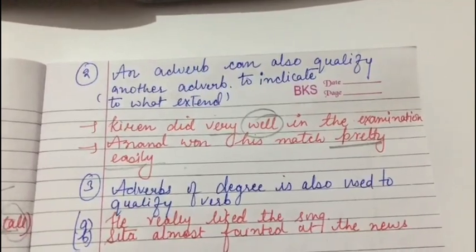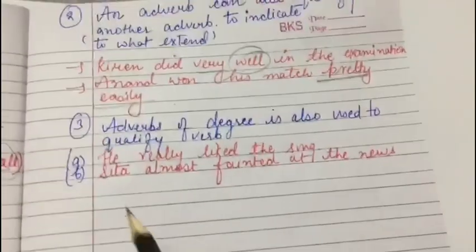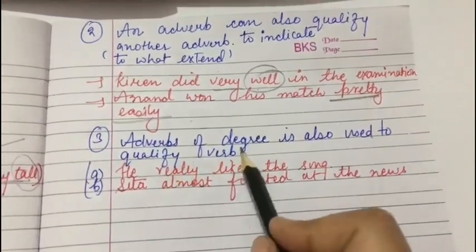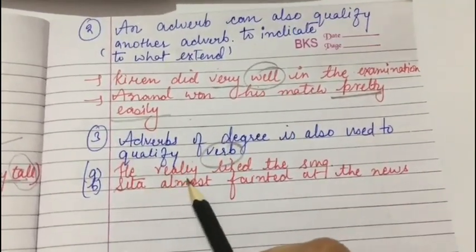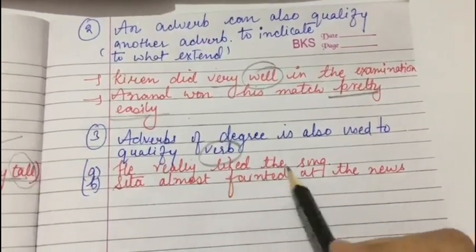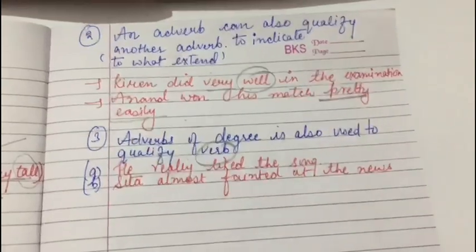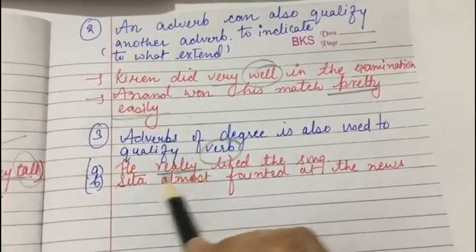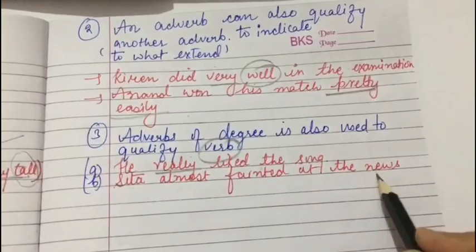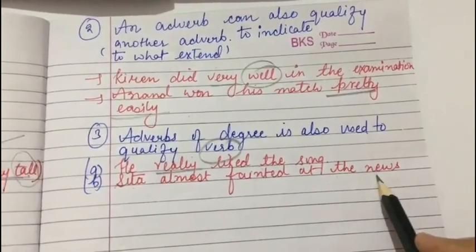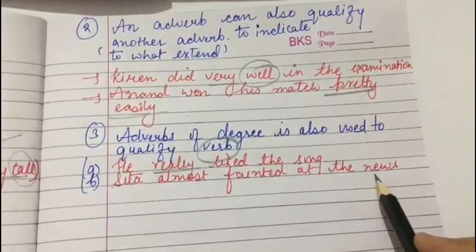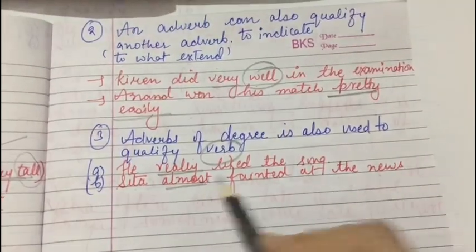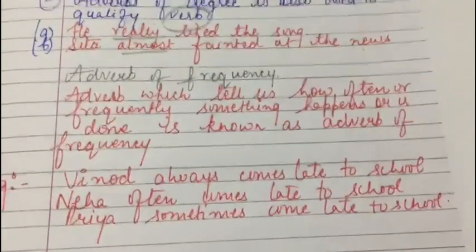When an adverb is used to qualify another adverb, it is also known as an adverb of degree. Adverb of degree is also used to qualify a verb — for example, 'He really liked the song' tells how much he liked it. Another example: 'Sita almost fainted at the news' — 'almost' tells us to what extent Sita fainted.